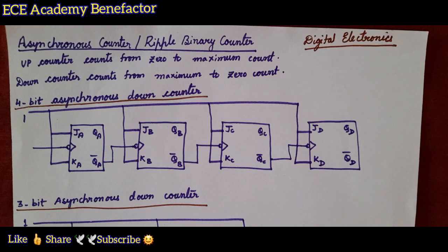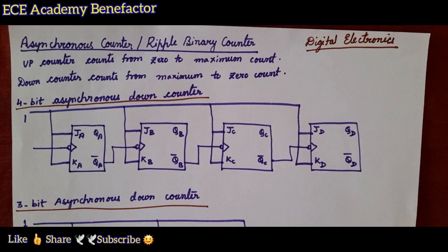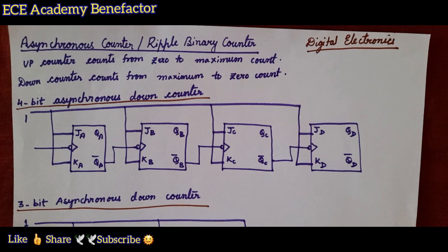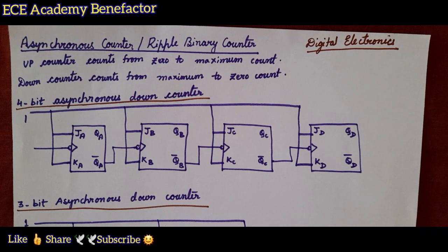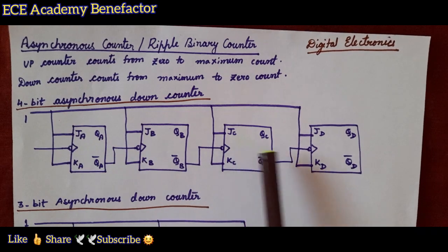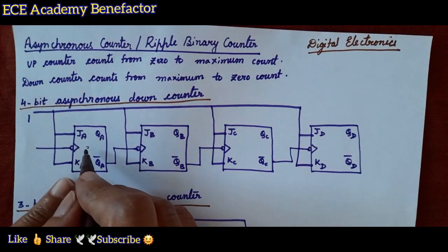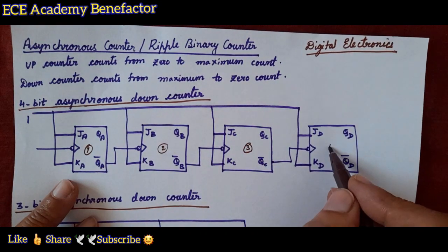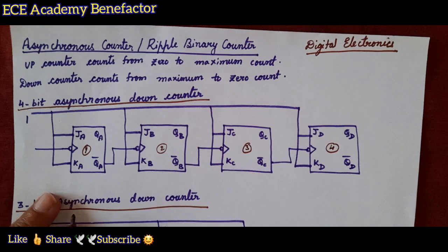Before going into the timing diagram of the asynchronous binary counter, let us see how to draw a 4-bit asynchronous down counter. 4-bit means it requires 4 flip-flops, because each flip-flop can store 1 bit of information. So 4-bit means we require 4 flip-flops, and it is asynchronous in nature.